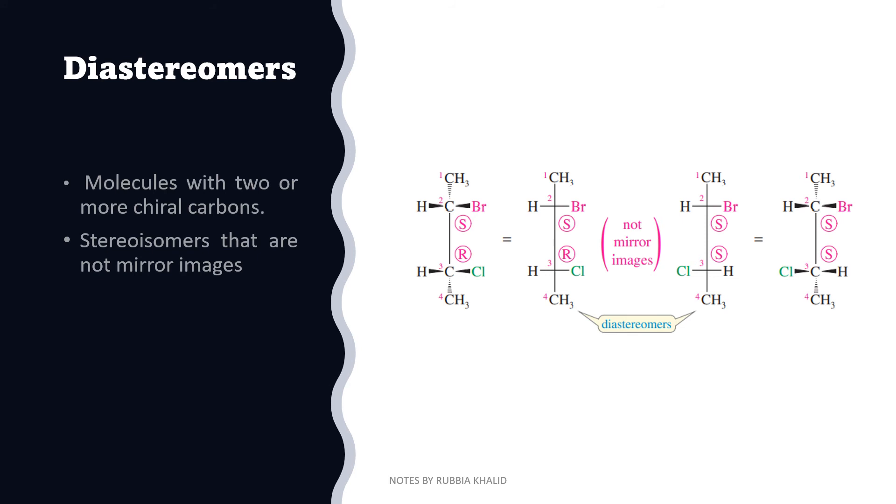Diastereomers are the molecules with two or more chiral carbons. Stereoisomers that are not mirror images of each other are called diastereomers. Here is an example of diastereomer.